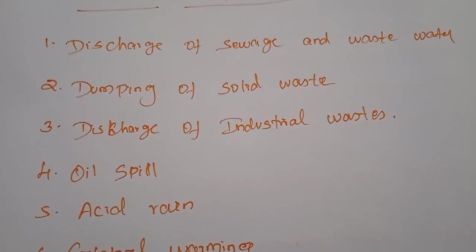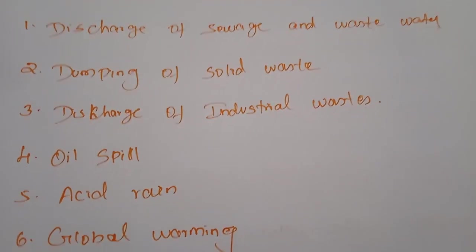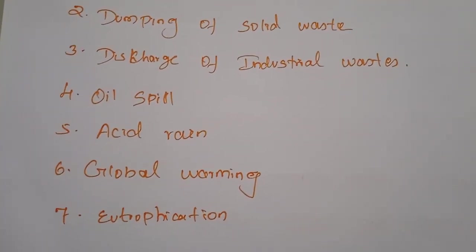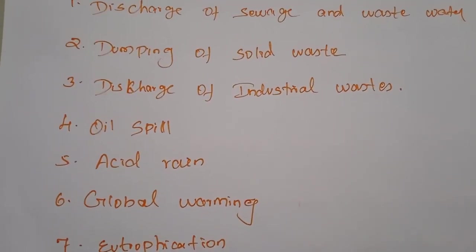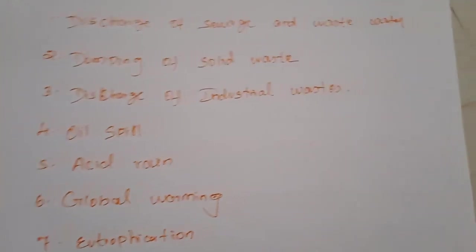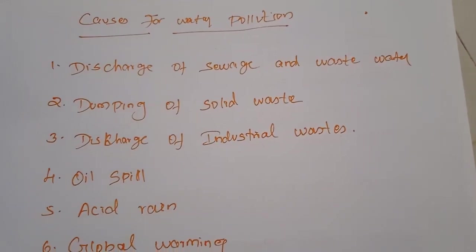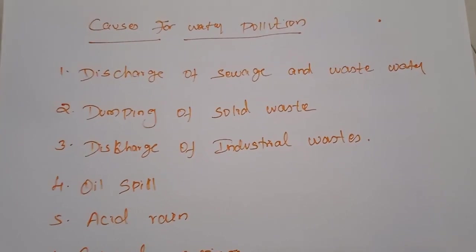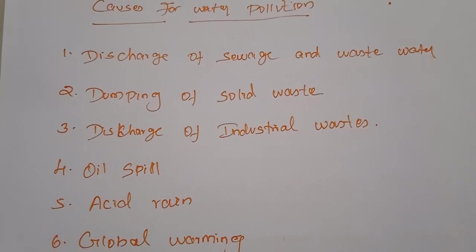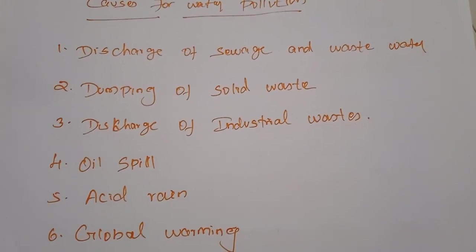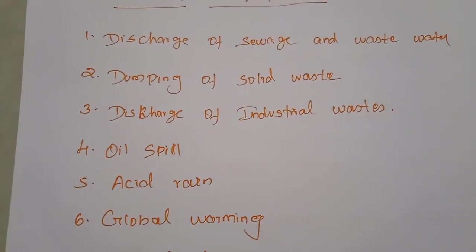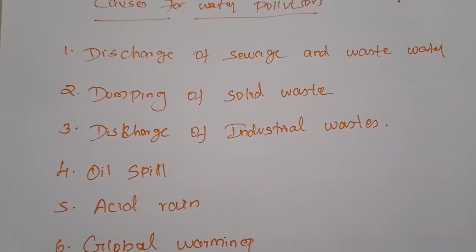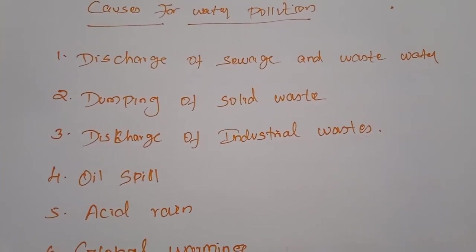If water is used to grow plants, and we eat food from those plants, it will harmfully affect us. Next, dumping of solid waste. The dumping of solid waste and litter in water bodies causes huge problems. Many industries, municipalities, and even individual persons dump solid waste in or near rivers. This is one of the key causes of water pollution.